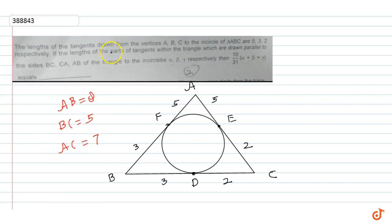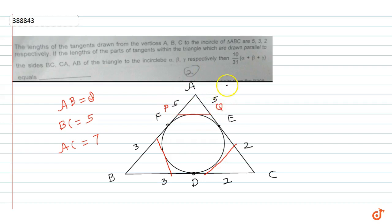If the length of the parts of tangents within the triangle which are drawn parallel to side BC to the incircle is alpha — so I have a line drawn parallel to BC. This length is alpha, and this is gamma. Let's say this point is P and this point is Q, so PQ value is equal to alpha.